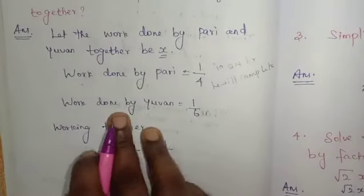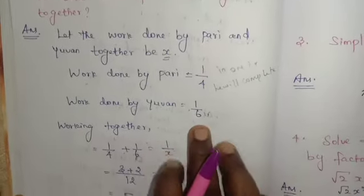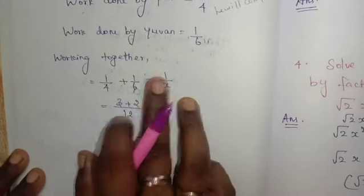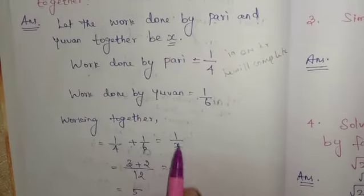The work done by Yuen is 1 by 6. In 1 hour, Yuen will complete one-sixth of the work. Working together, 1 by 4 plus 1 by 6 is equal to 1 by X.